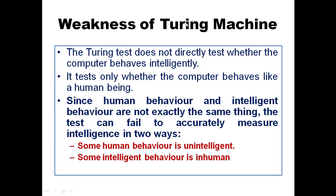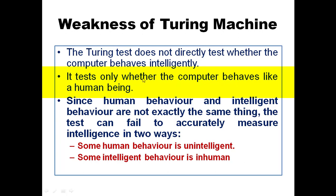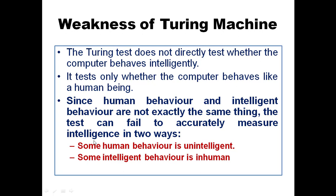Although the Turing test is very famous, it still has some weaknesses because it does not consider two important points. The Turing test doesn't directly test whether the computer behaves intelligently — it only tests whether the computer behaves like a human. Since human behavior and intelligent behavior are not exactly the same thing, the test can fail to accurately measure intelligence in two different ways.